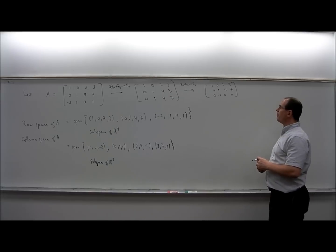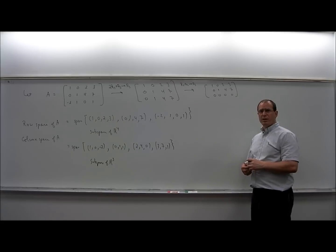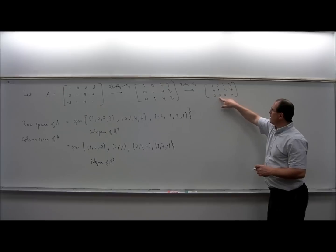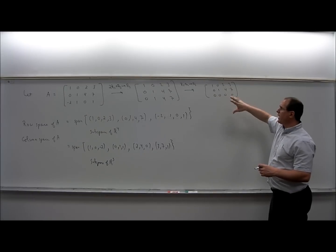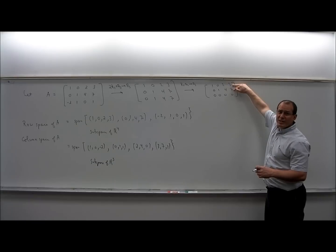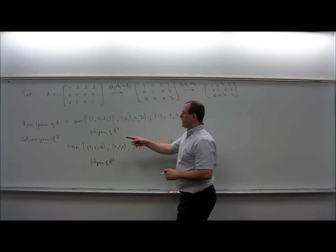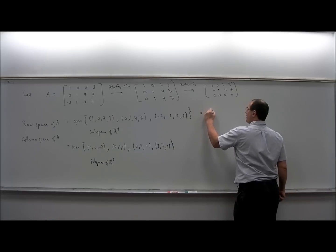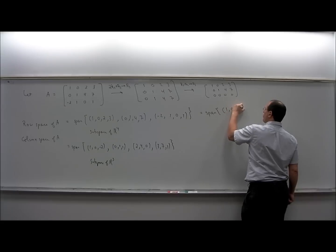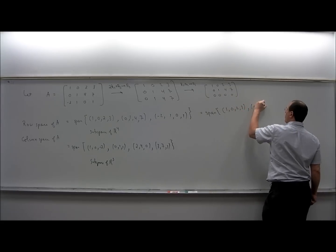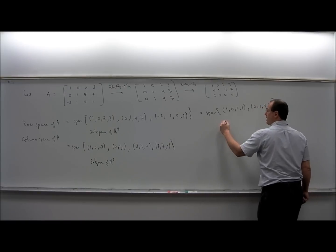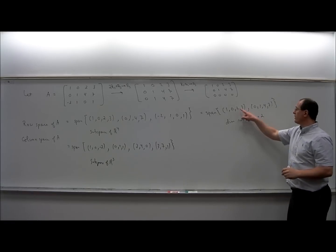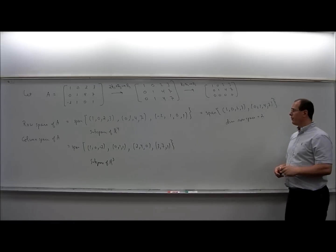It's not necessary to have reduced row echelon form to determine the row space. Since the bottom row is all zeros, the third row was a linear combination of the top two. So the row space is the span of just (1, 0, 2, 3) and (0, 1, 4, 7). The dimension of the row space is 2. These two vectors are linearly independent and form a basis for the row space.